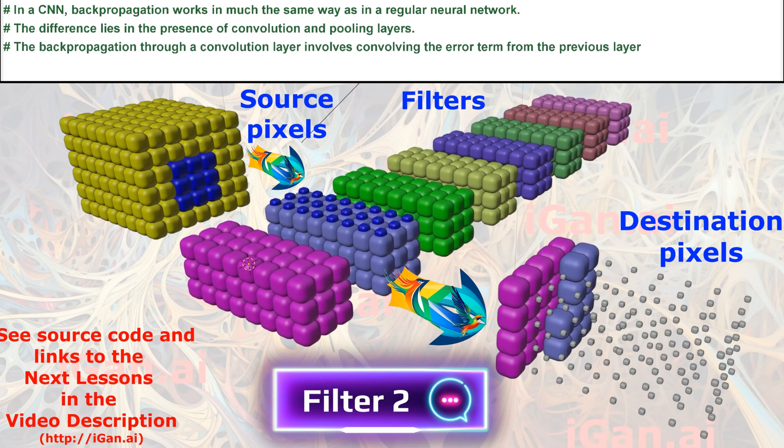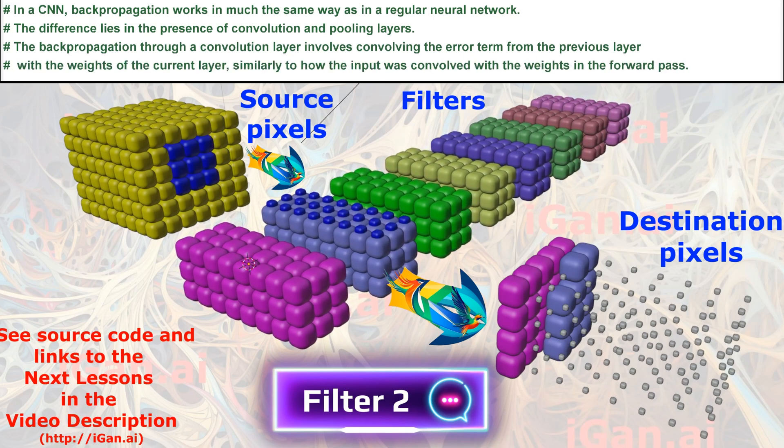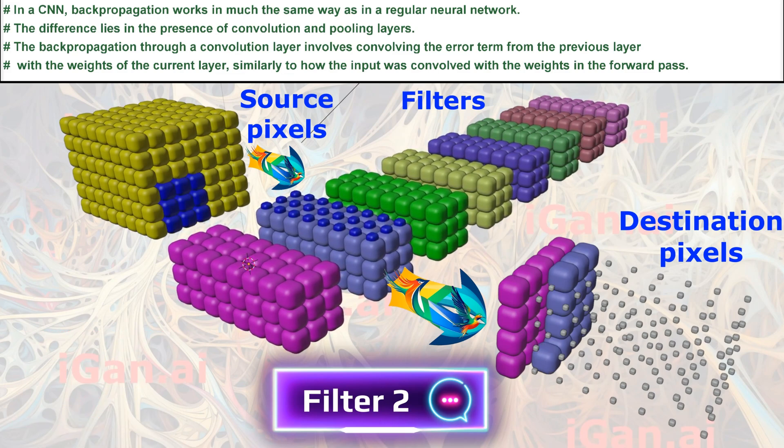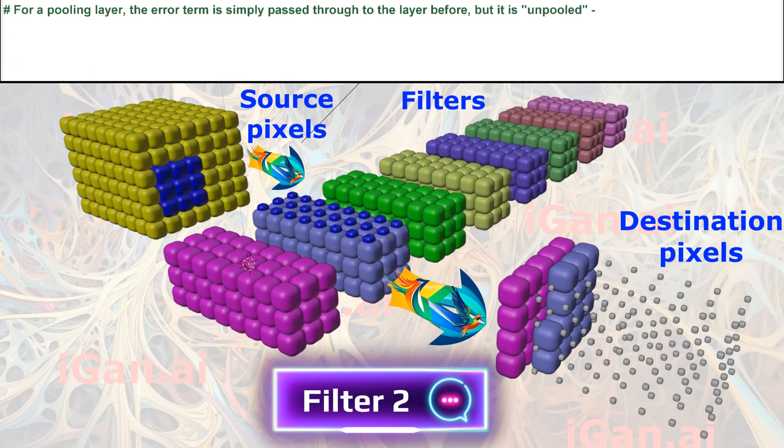The backpropagation through a convolution layer involves convolving the error term from the previous layer with the weights of the current layer, similarly to how the input was convolved with the weights in the forward pass.